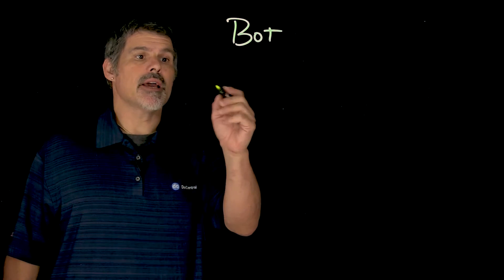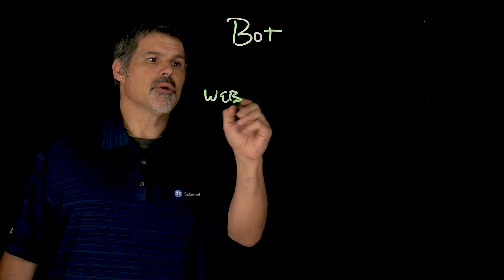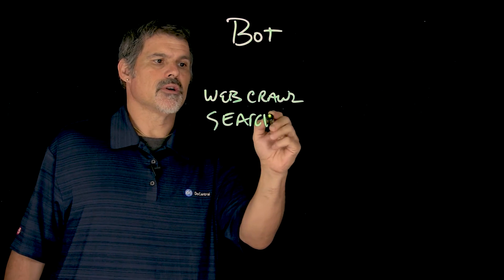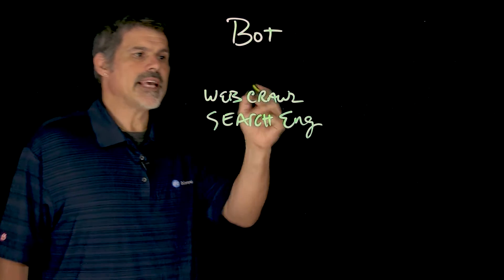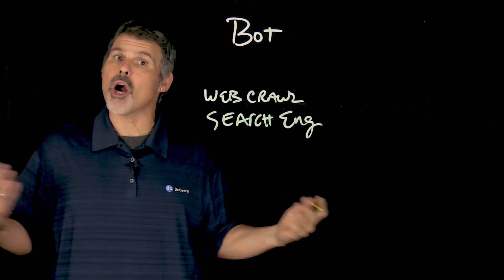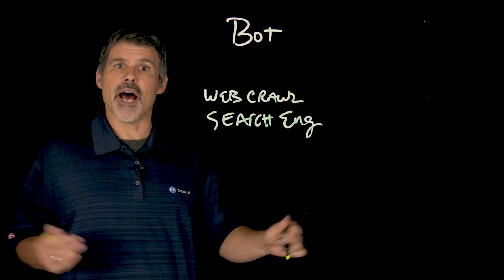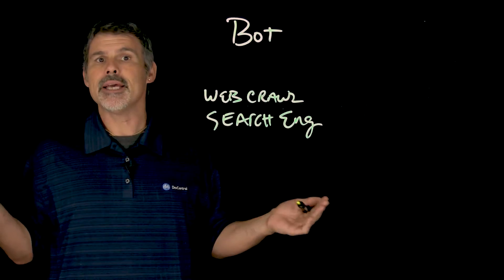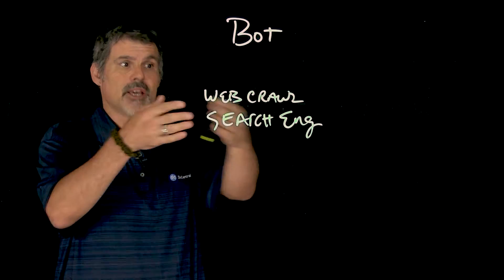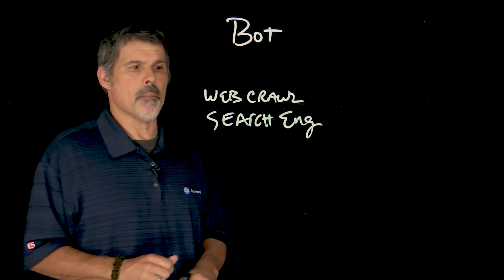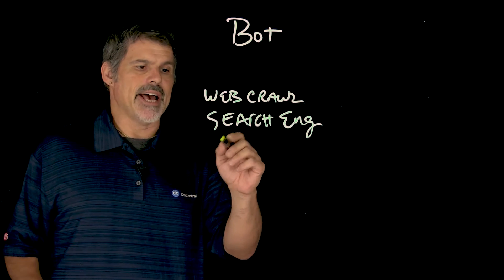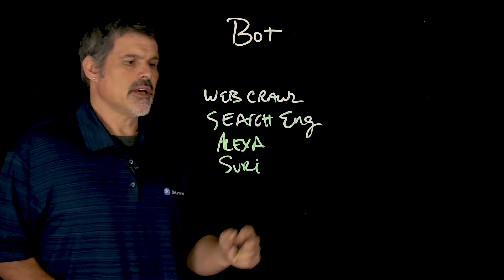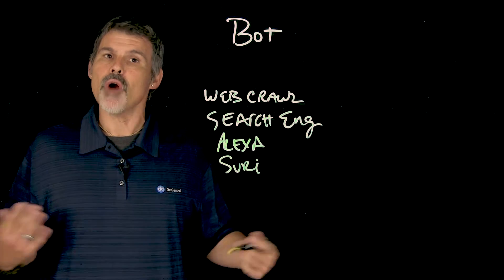So things like web crawlers or search engines — these things are bots. They're designed to crawl the website and crawl the internet to find out what's out there, to be able to index it. Vulnerability scanners might also be within this realm. Other things like Alexa and Siri, these digital assistants, they're also bots.